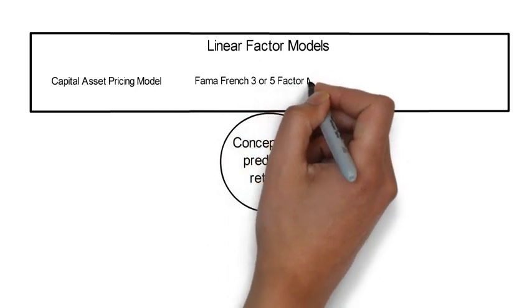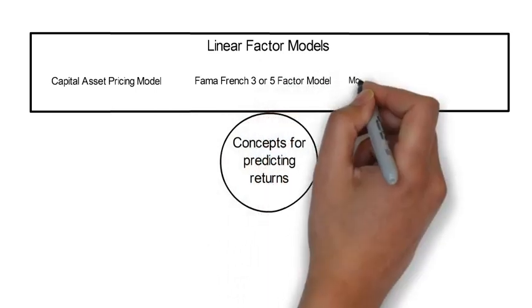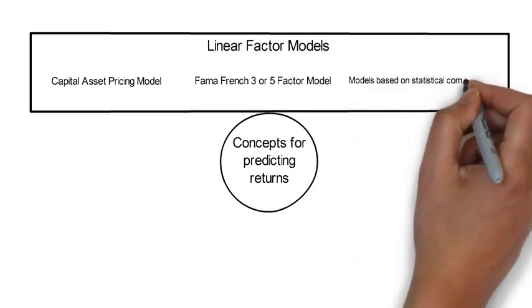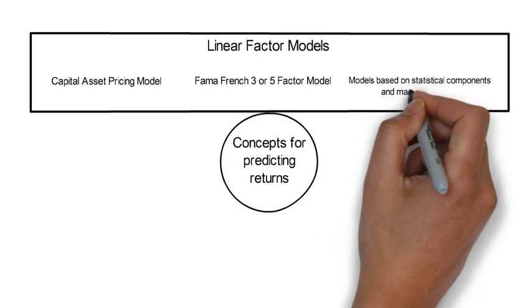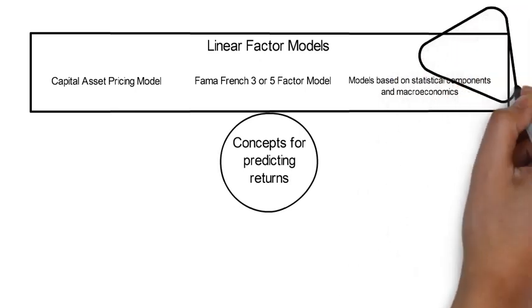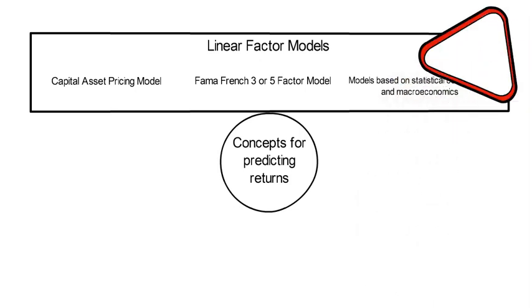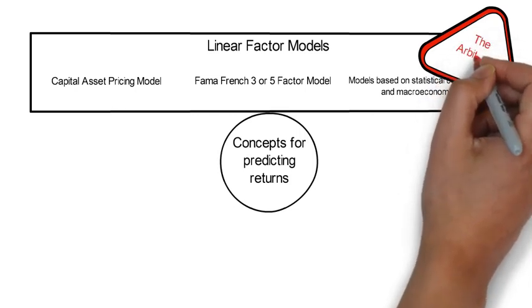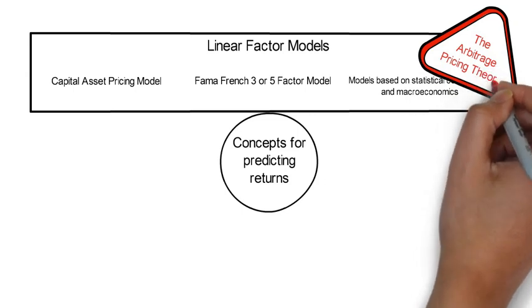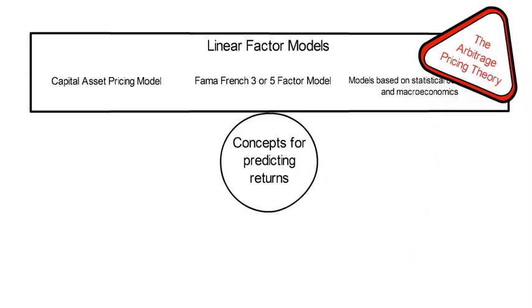Other linear factor models that we talk about in this course are based on statistical principal components or on observed macroeconomic factors. All of these fundamental financial return predicting models are special cases of what is called the APT, meaning the arbitrage pricing theory.